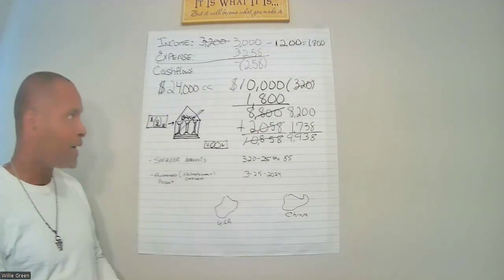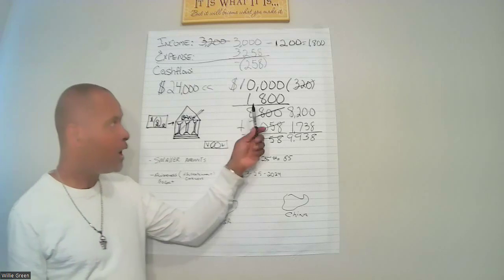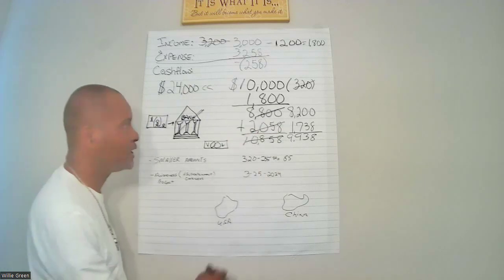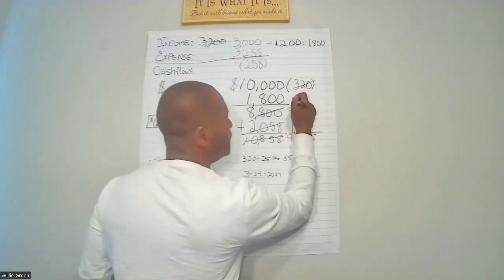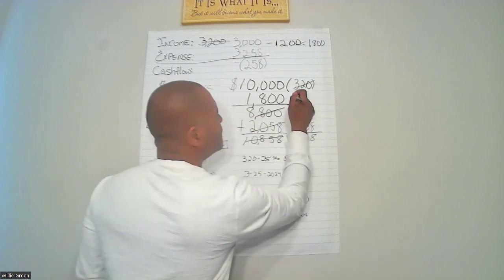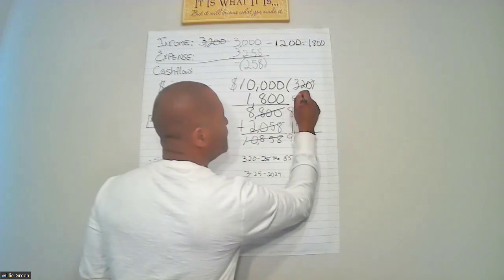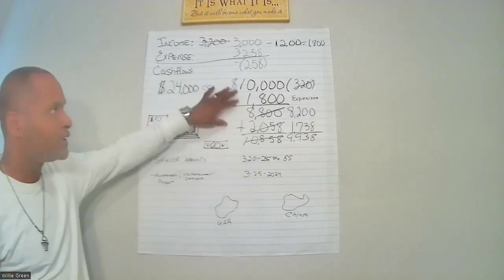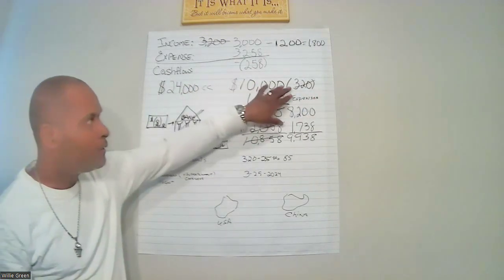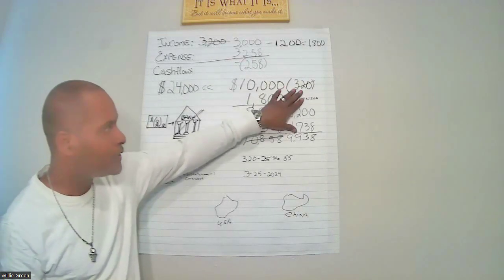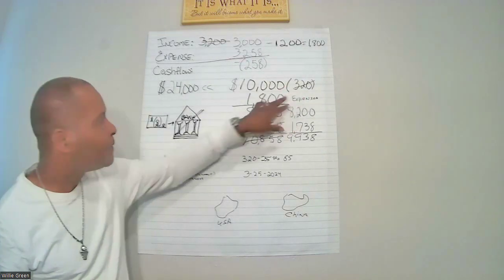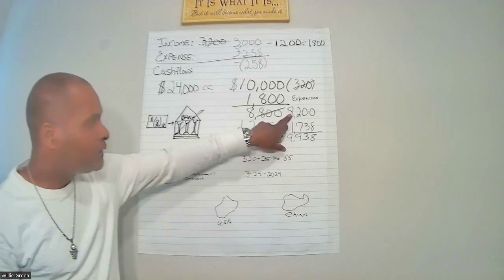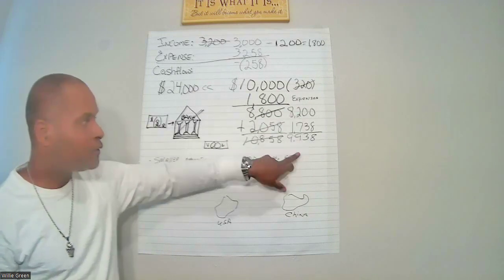We're going to try to make sure that we put all $1,800 in expenses on the $10,000 credit card to make the payment, and that should satisfy and leave us a balance of $8,200.